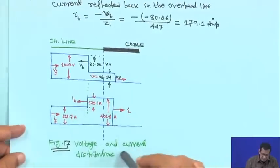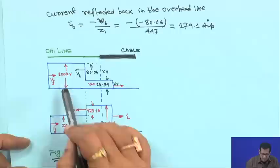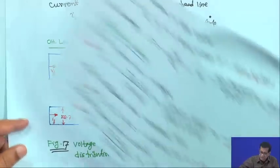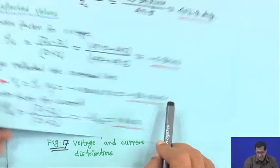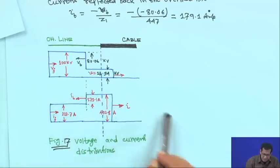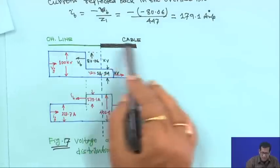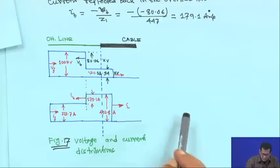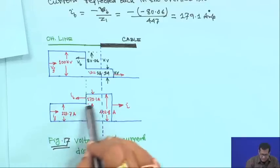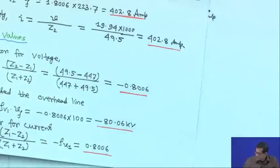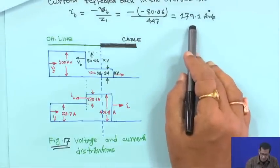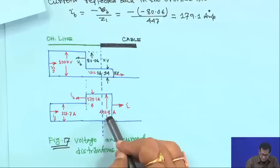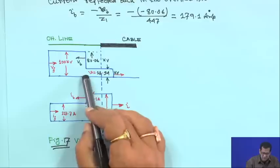The diagram shows voltage and current distribution. The initial travelling wave is 100 kV, but 80.06 kV reflects back as −80.06 kV. The resultant at the junction is 19.94 kV. For current, the incident is 223.7 amperes plus reflected 179.1 amperes, giving 402.8 amperes as the transmitted current wave.